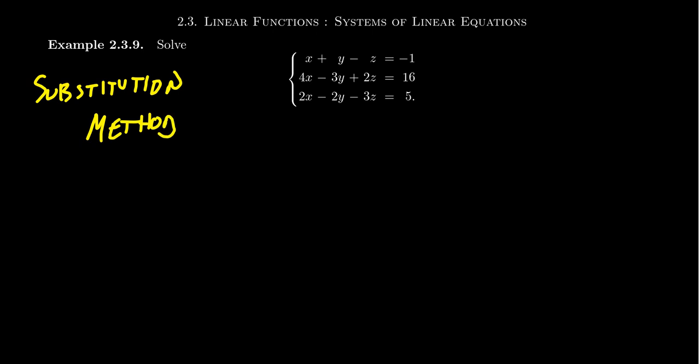Well, the idea here is the following. With the substitution method, we take an equation and we select one of the variables. So for example, we might choose variable z inside of the first equation. We then solve for that variable. Well, in order to do that, we basically just have to swap the locations of the z and the one. This will give us that z is equal to x plus y plus one.